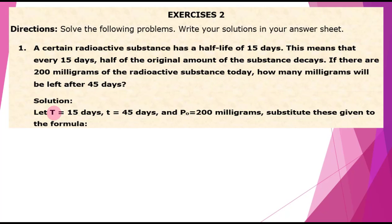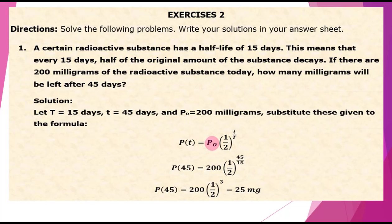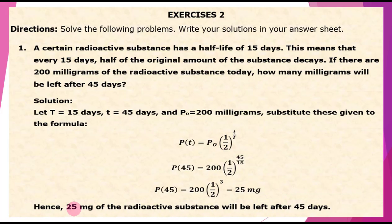For the solution, let capital T equals 15 days and small t equals 45 days. P sub 0, the initial amount, is 200 milligrams. Substituting into the formula P(t) equals P sub 0 times the quantity one-half, raised to t over T. We find P(45) equals 200 times one-half raised to 45 over 15, giving us 25 milligrams. Hence, 25 milligrams of the radioactive substance will be left after 45 days.